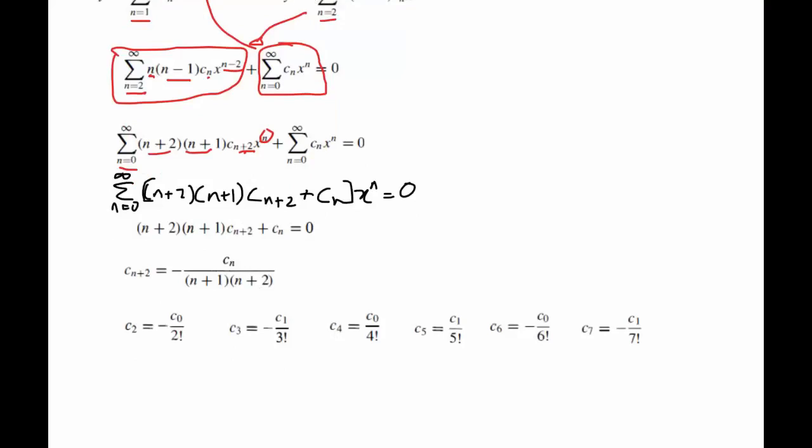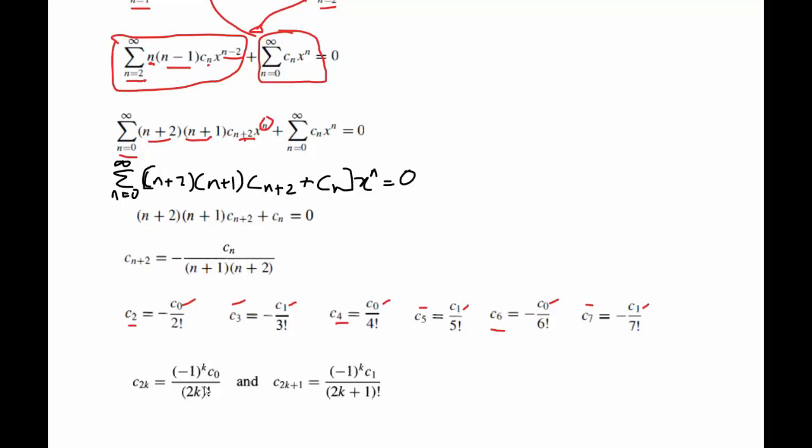The pattern you should notice here is basically what's going on—you'll see there's a c_0 here, c_1 here, c_0 here, c_1 here, c_0 here, and c_1 here. And we notice that the ones that have the c_0 are all the even ones. So there are two, in fact.